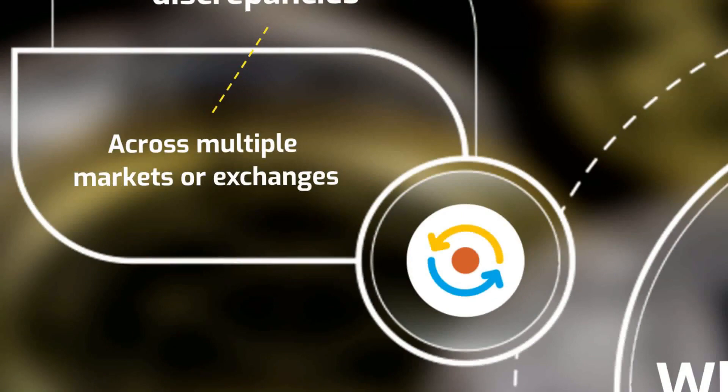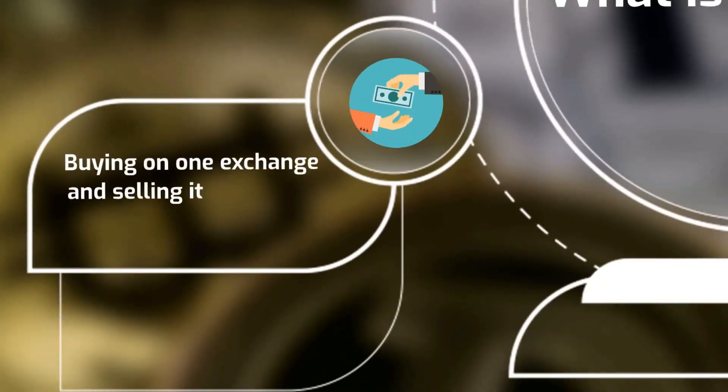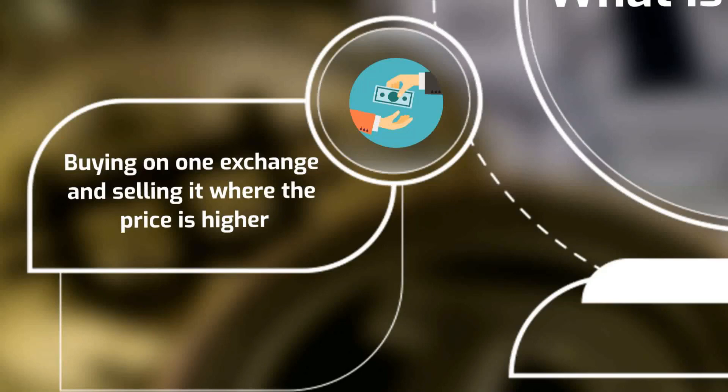In simple terms, crypto arbitrage trading is the process of buying a digital asset on one exchange and selling it simultaneously on another where the price is higher. Arbitrage is widely considered to offer an attractive investment opportunity as it tends to provide healthy returns while exposing the investor to minimal risk.